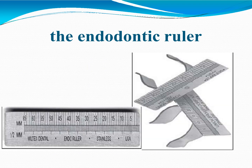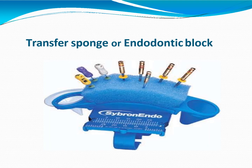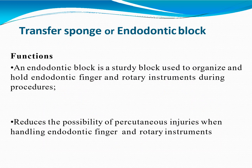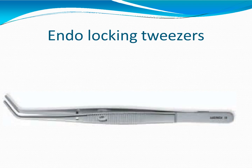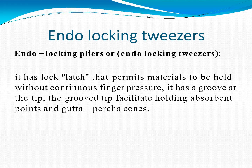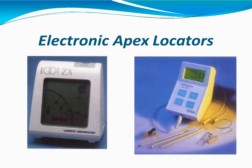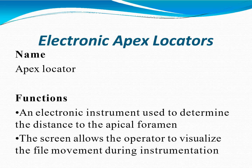Special endodontic rulers are available for measuring the length of finger instruments. An endodontic block is a sturdy block used to organize and hold endodontic finger and rotary instruments during procedures, reducing the possibility of percutaneous injuries when handling them. Endo locking tweezers have a latch that permits materials to be held without continuous finger pressure, and a groove at the tip that facilitates holding absorbent points and gutta-percha cones.